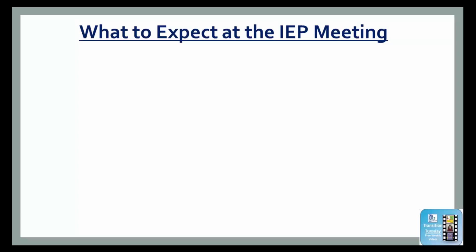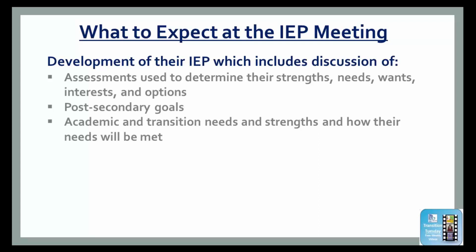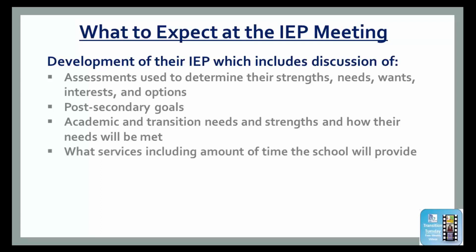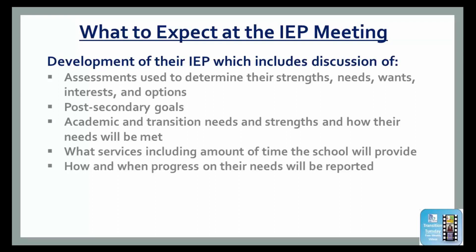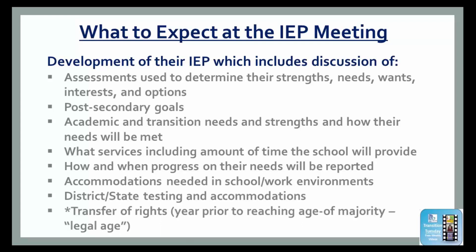After you explain what an IEP is and what the roles of the different team members are at the meeting, it's important to explain to the student what they can expect at their IEP meeting. Tell them the IEP meeting includes discussion of the assessments used to determine their strengths, needs, wants, interests, and options; their post-secondary goals; their academic and transition needs and strengths; how their needs will be met; what services including the amount of time the school will provide to meet these needs; how and when progress on their needs will be reported; what accommodations they need in school and work environments; what district or state testing they will be taking and the accommodations that will be provided; and if it's a year prior to them reaching the age of majority, their transfer of rights, which they may understand as legal age.